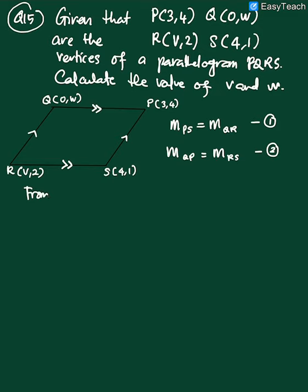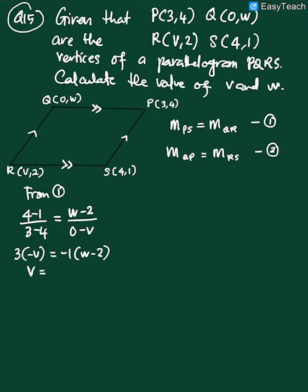Okay, so from equation 1, the gradient is 4 minus 1 over 3 minus 4 equal to W minus 2 over 0 minus V. So we have 3 negative V over negative 1. So this is negative 1 times W minus 2 and I have my V now is equal to negative 1 times W minus 2.